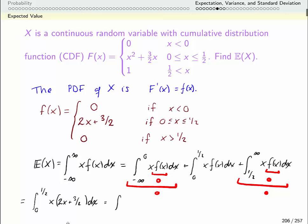So the area I need to find works out to the area under the curve from 0 to 1 half of 2x squared plus 3 halves x.